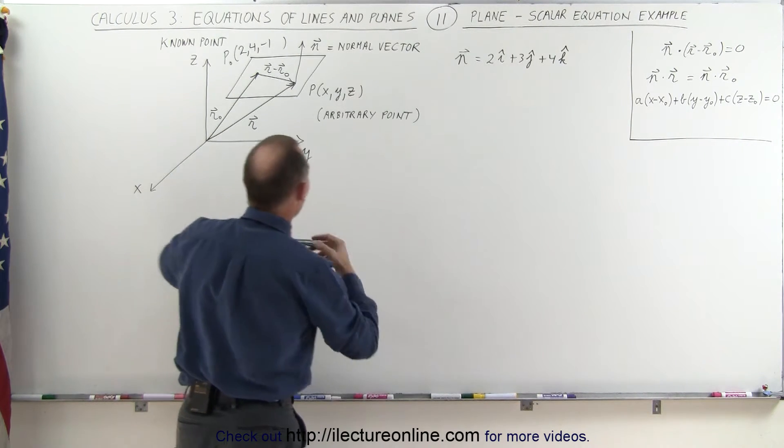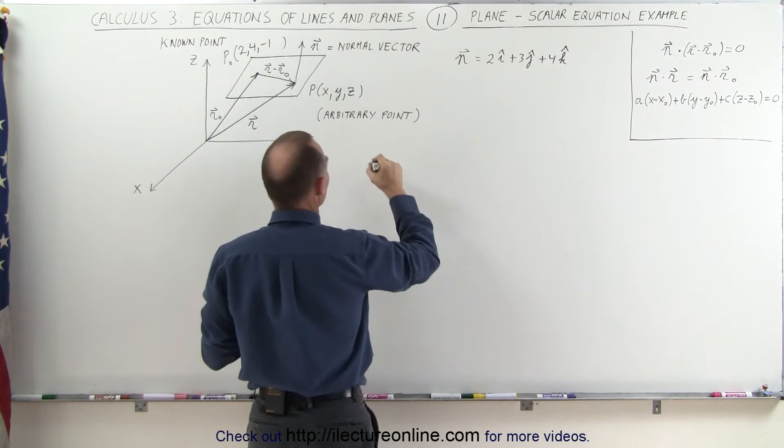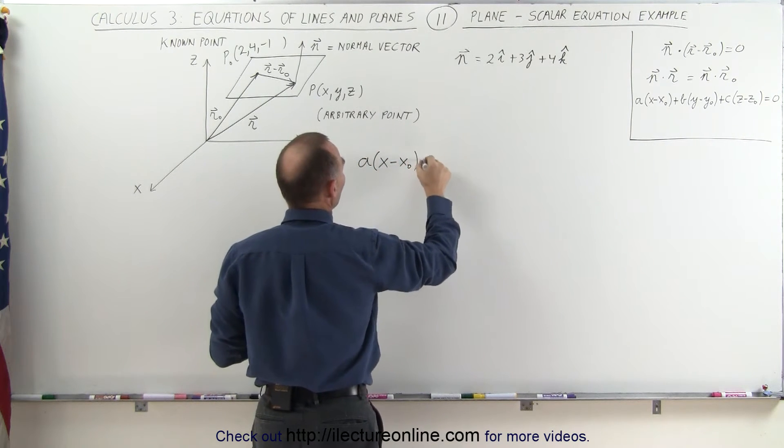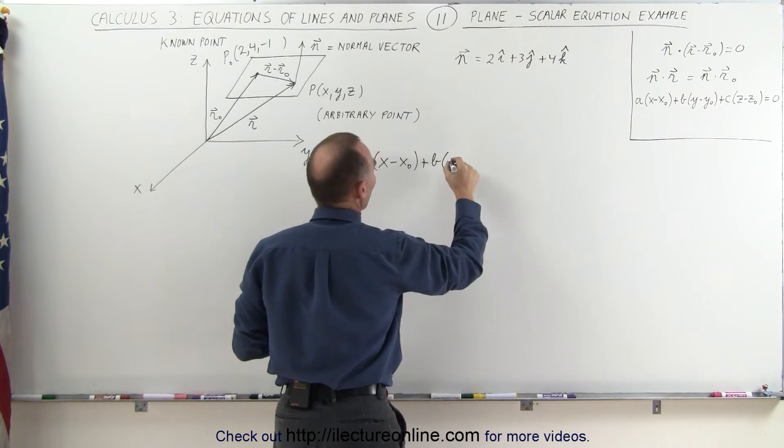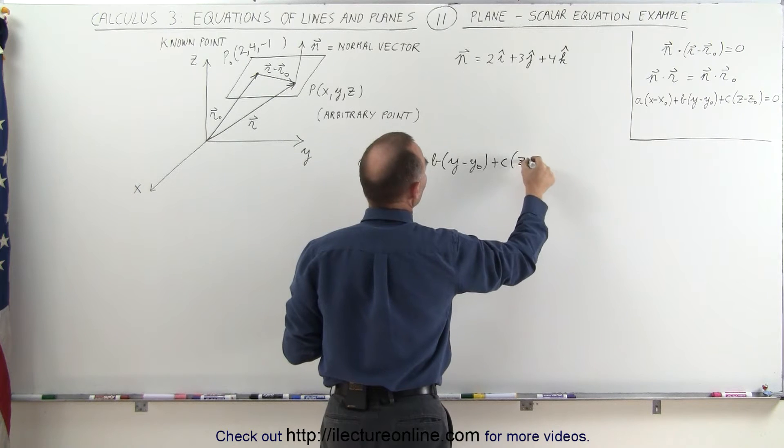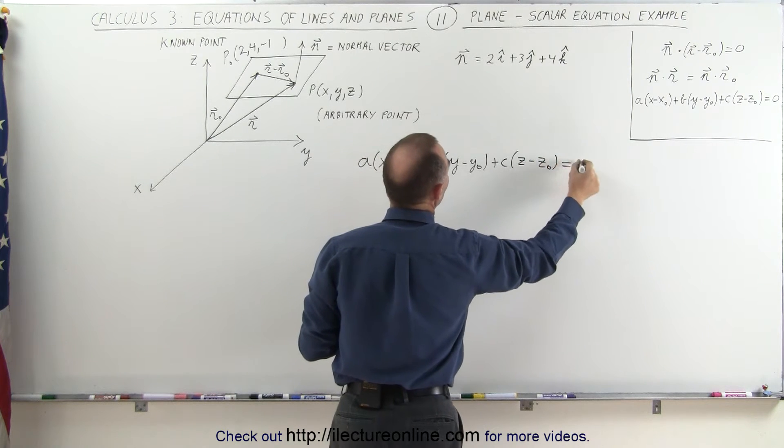Simply plug it into the equation that we have. We might as well write the equation down right here. A times X minus X sub-naught plus B times Y minus Y sub-naught plus C times Z minus Z sub-naught is equal to 0.